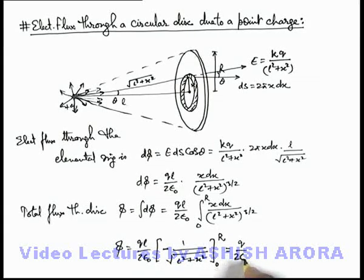If we take l in, the result will be q by 2 epsilon not, and this will be 1 minus l by root of (l square plus r square). This is quite a useful result you can keep on tips.